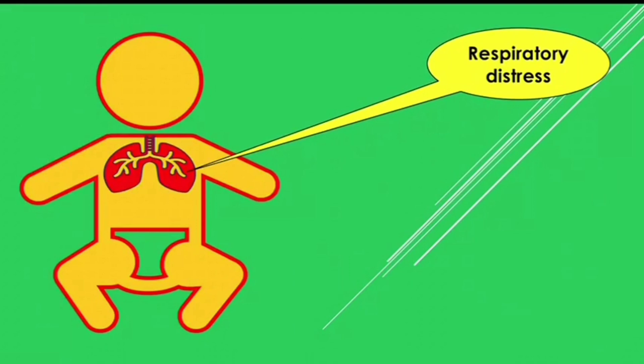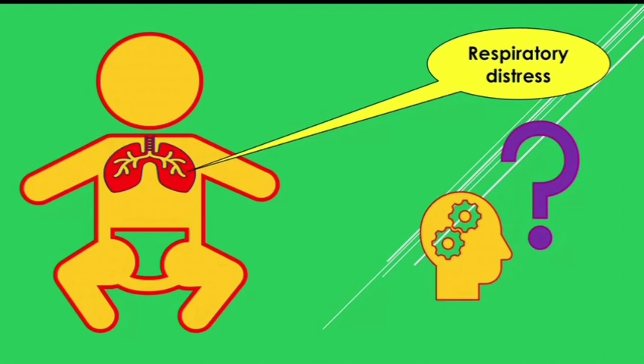The next manifestation is respiratory distress. The more common cause is respiratory distress syndrome, that is hyaline membrane disease. We need to understand why hyaline membrane disease occurs in these large macrosomic IDM babies.